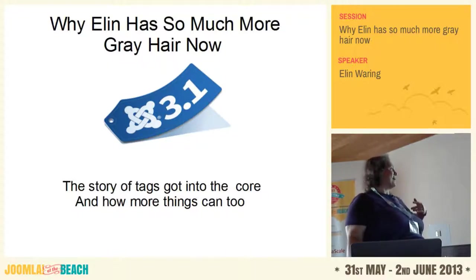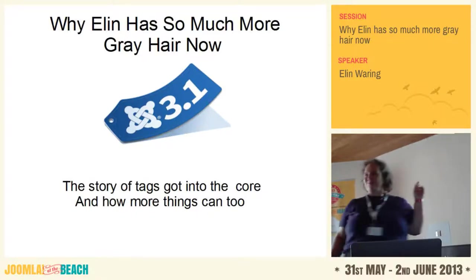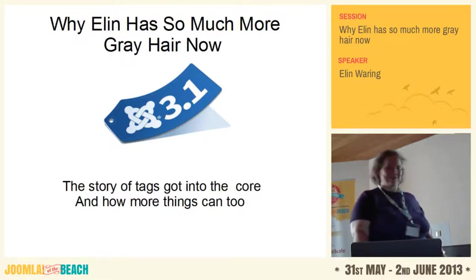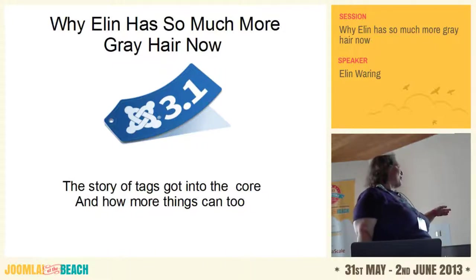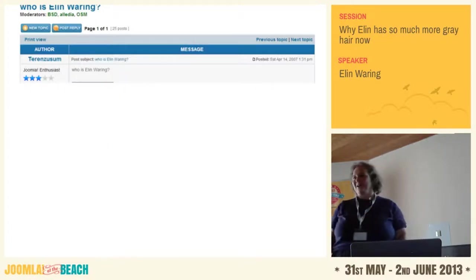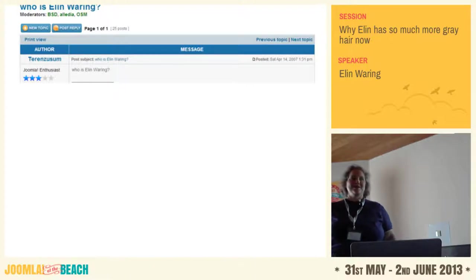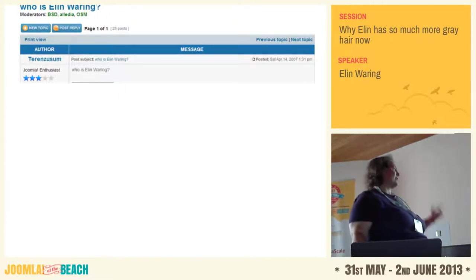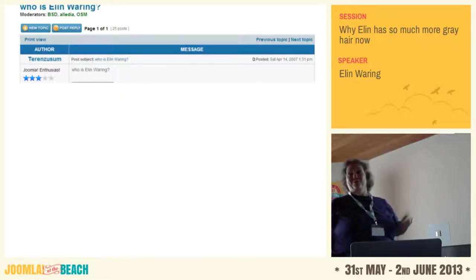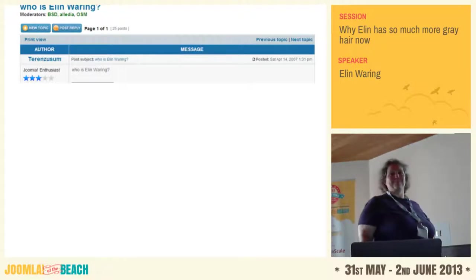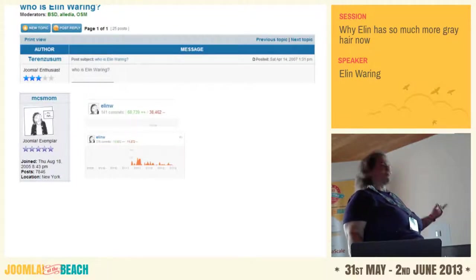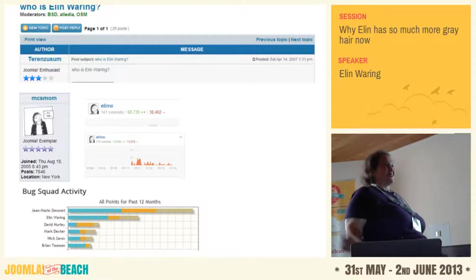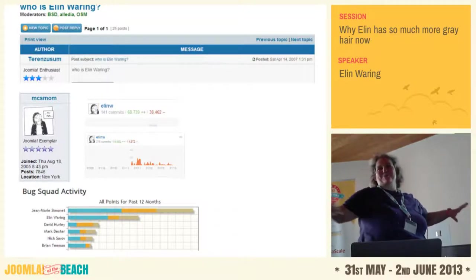I'm Elin Waring. This is an actual forum post on the Joomla.org site. I've done a lot of things around the Joomla project. I've been on the forum since August 18th, 2005, right after the fork. Right now I spend most of my time working on development in the core — bug fixes and some bigger projects like tags and the framework. I was number three in commits on the framework, which I found kind of astonishing, though most of those are doc blocks.